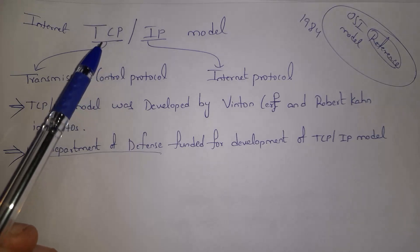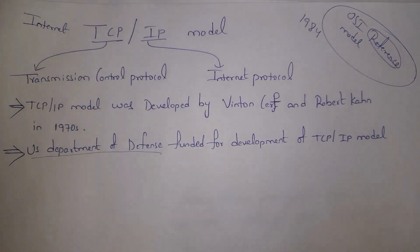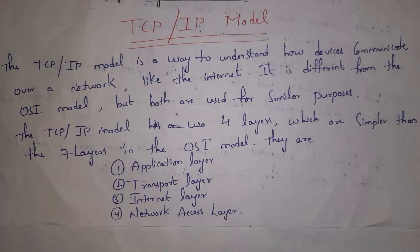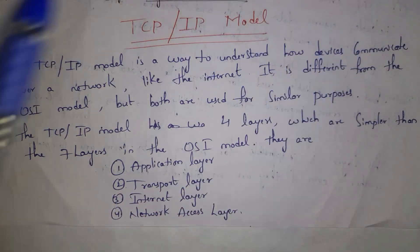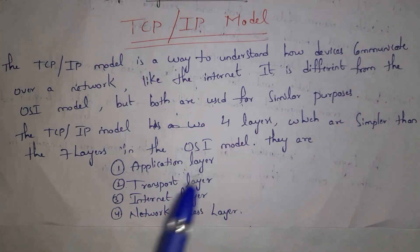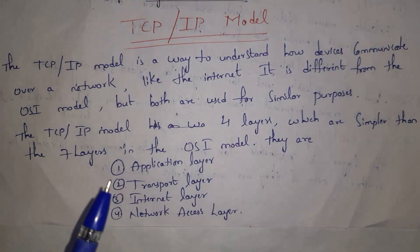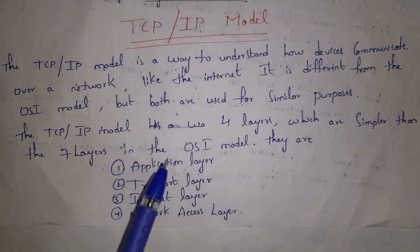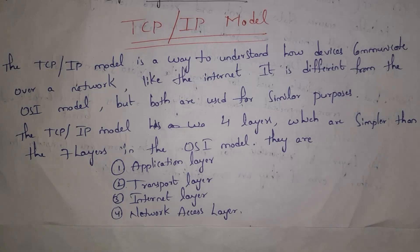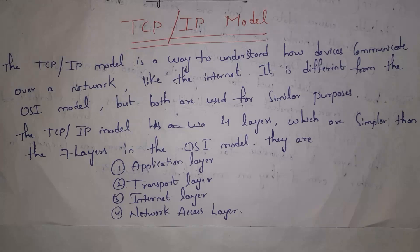The internet was implemented by using the TCP/IP model. All devices are communicating on the internet because of the TCP/IP model. By seeing both the OSI model and the TCP/IP model, we can clearly understand how devices will communicate over a network, though both are used for similar purposes but they are different.